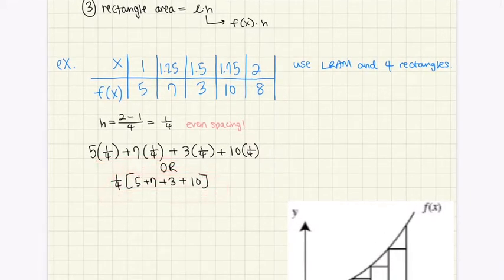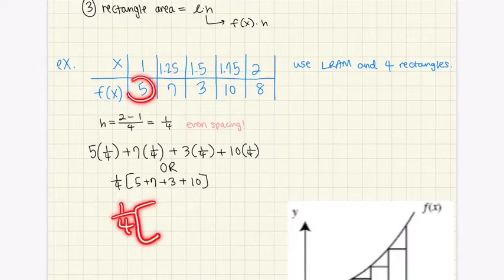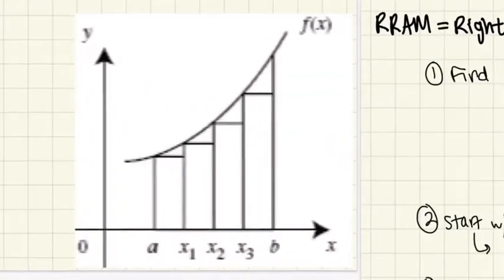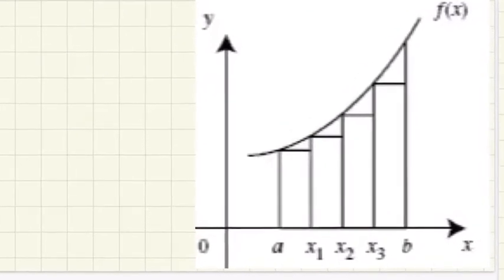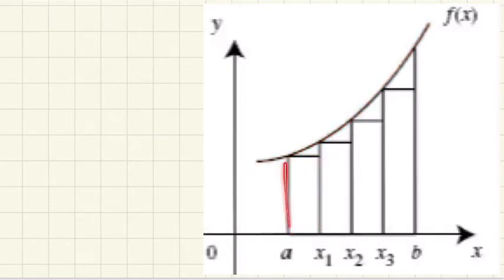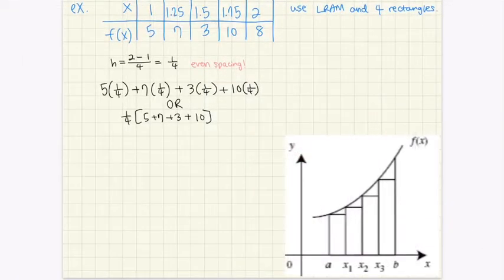Because the spacing is even, you can simplify the notation by factoring out h and summing the f(x) values — this is less work and takes less space. As you can see in the graph, these are the rectangles approximating the area under the actual curve. There are some spaces between the rectangles and the curve that are not included in the calculation.